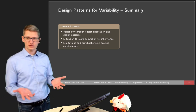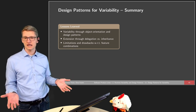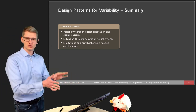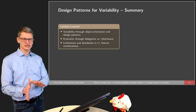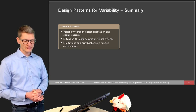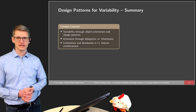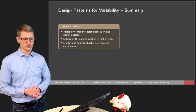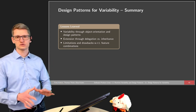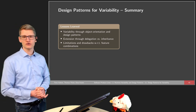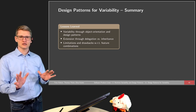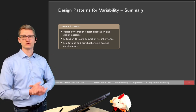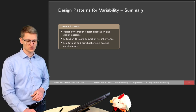The idea of presenting these three design patterns — template method, abstract factory, and decorator — for variability is that you understand how design patterns can support variability. But there is not a single design pattern applicable in all possible cases. We can express variability with object orientation and design patterns, and provide extensions via delegation or inheritance. However, we have certain limitations regarding feature combinations, and in later lectures we will see strategies to implement product lines that are more flexible in designing exactly those combinations we need, with less runtime overhead.